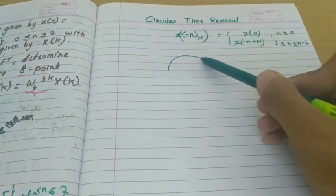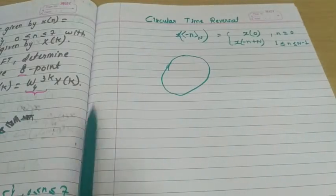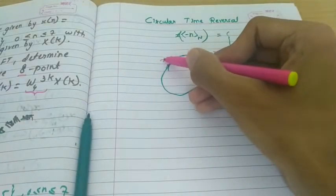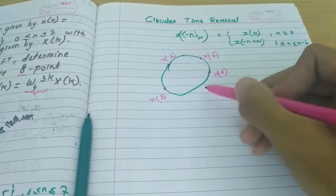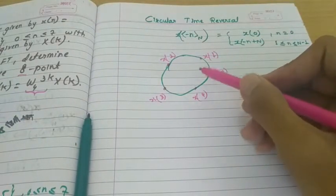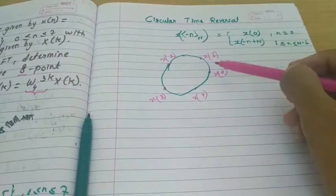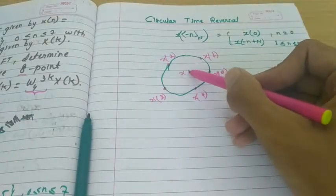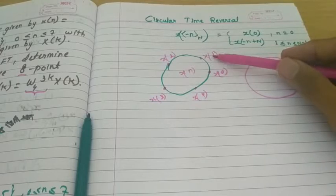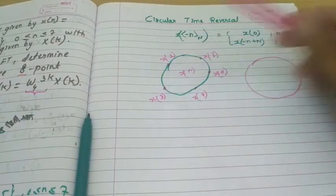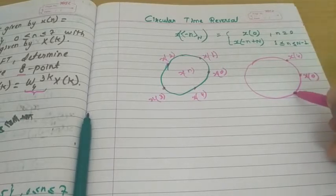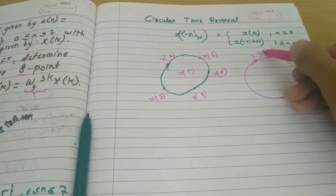Let's visualize this. Consider a circle with points x of 0, x of 1, and so on — a 5-point sequence from 0 to 4. To get x of minus n, we reverse samples about the origin: sample 1 goes to position 4, sample 4 goes to position 1, sample 2 goes to position 3, and sample 3 goes to position 2. x of 0 remains at its position. So x of 4 is here, x of 1 is here, x of 3 is here, and x of 2 is here.